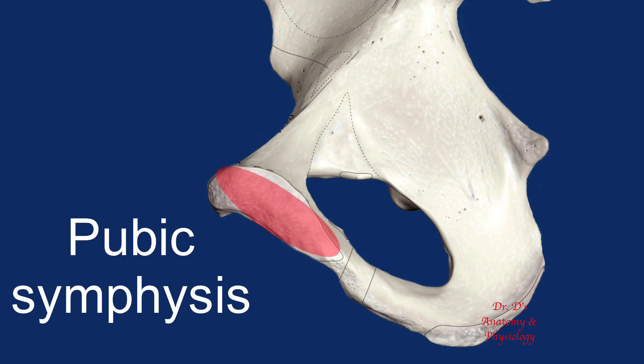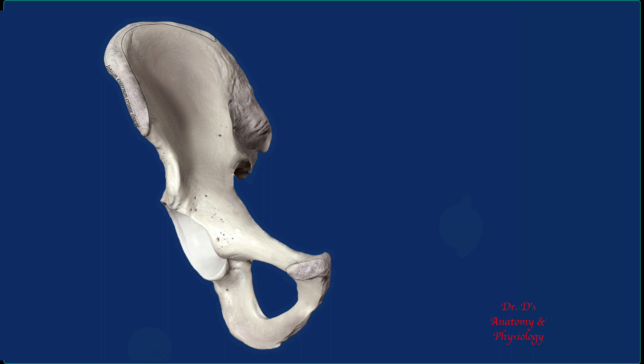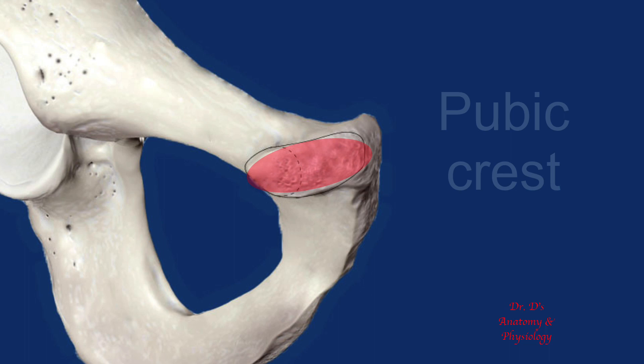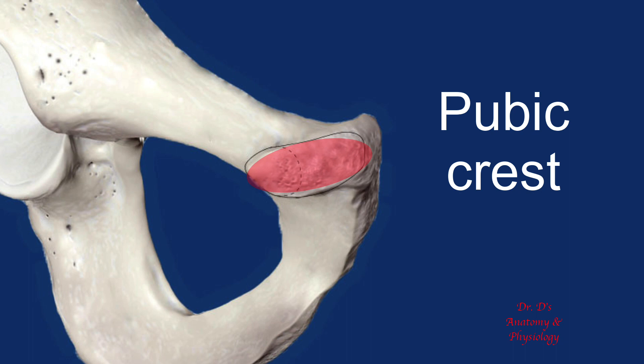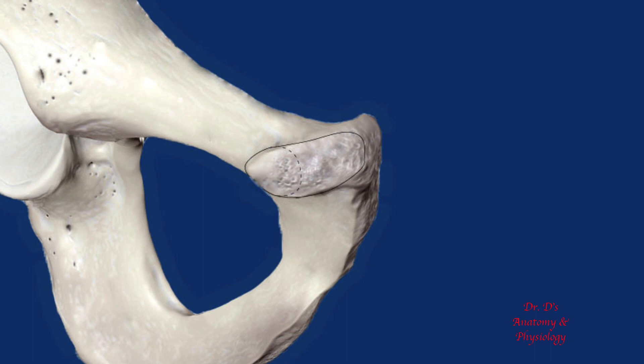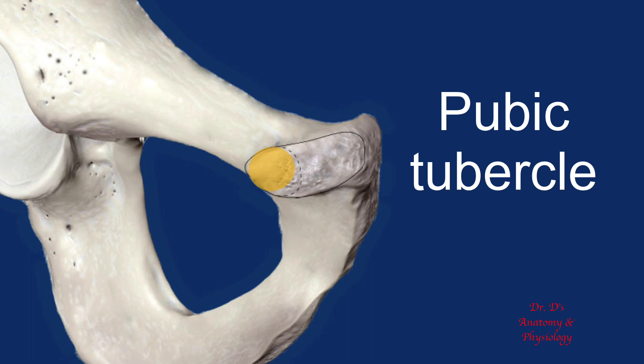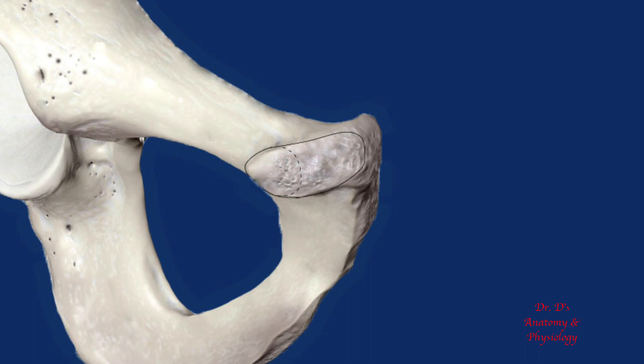To look at more features, we switch to an anterior view of the hip bone. The most anterior part of the pubic bone is the pubic crest. The superior border of the crest, along with the pectineal line, contributes to the pelvic brim. On the lateral end of the pubic crest there is a bump called the pubic tubercle, which serves as a point of attachment for the inguinal ligament.